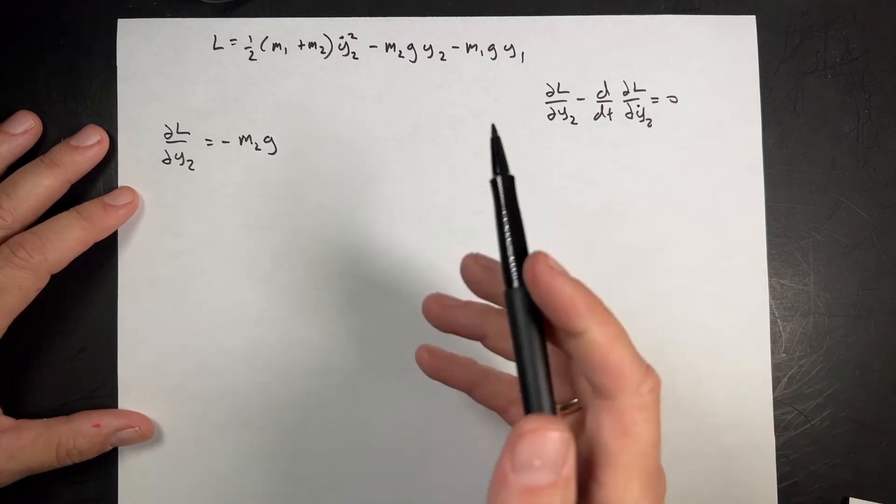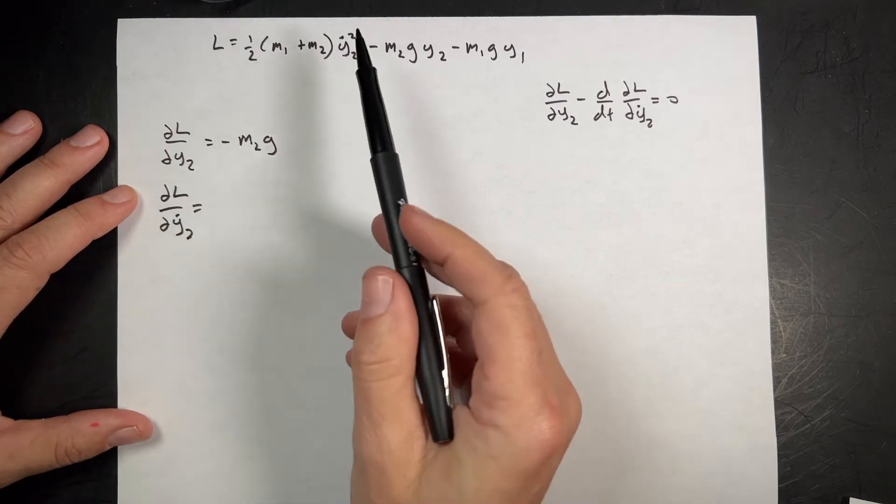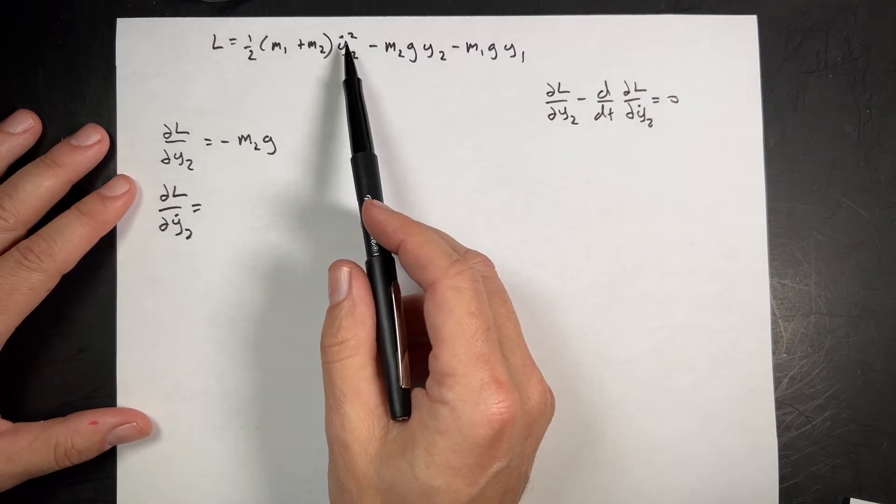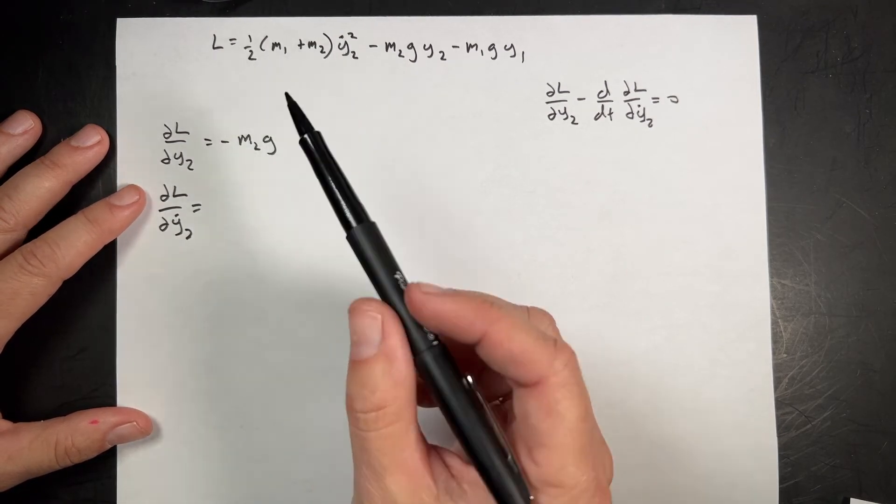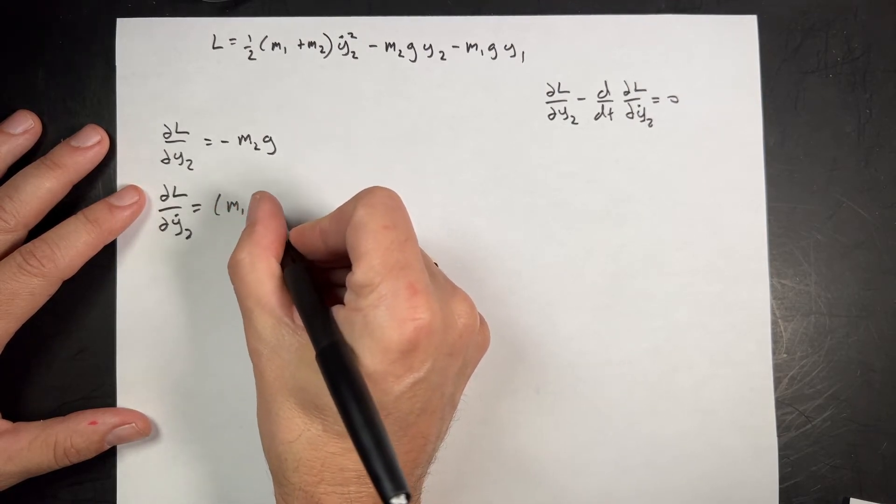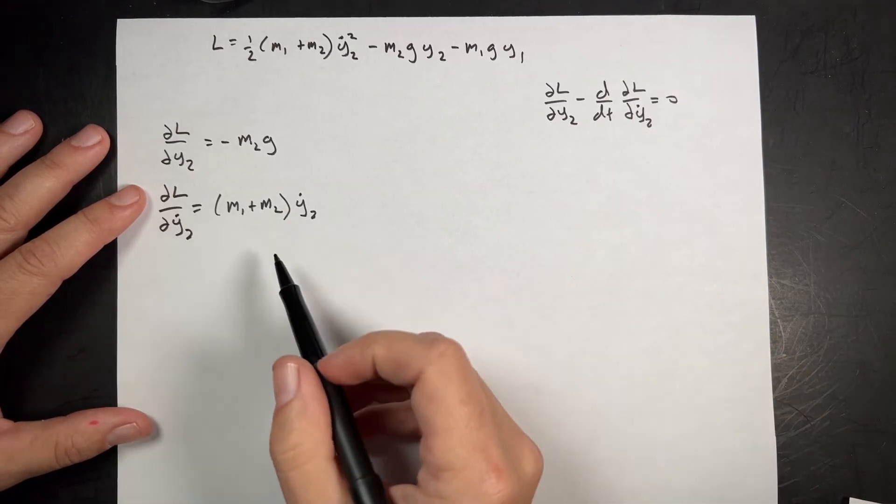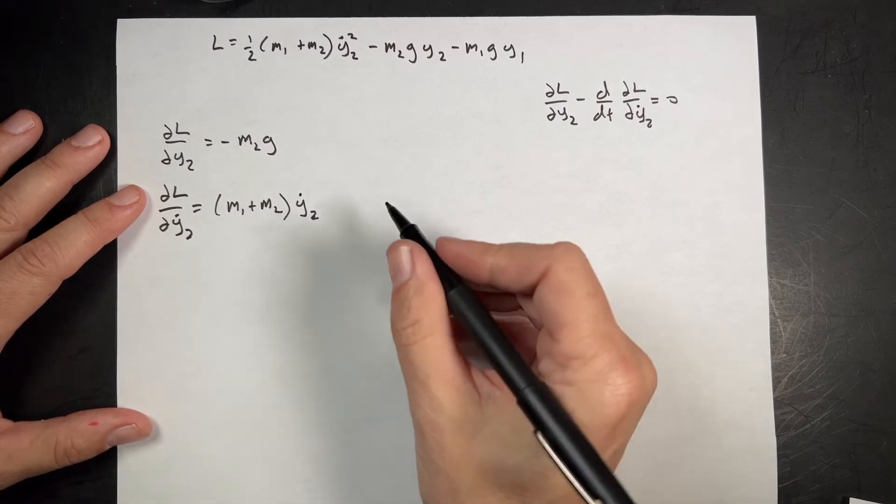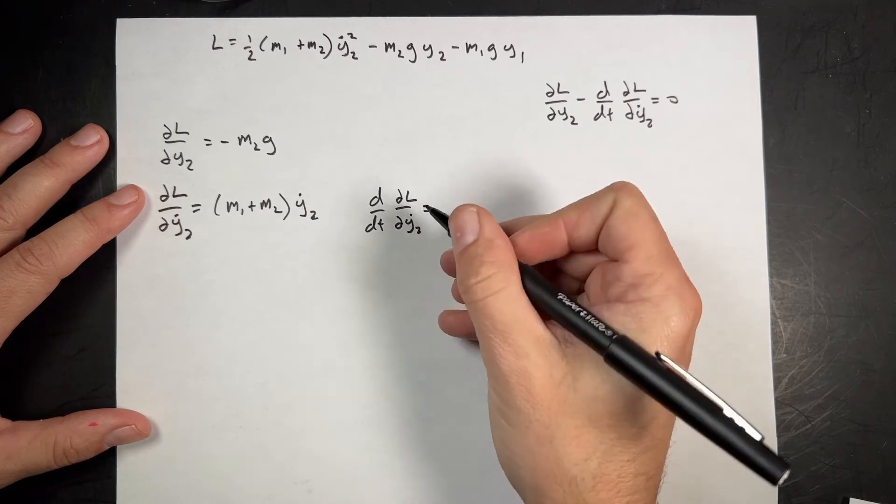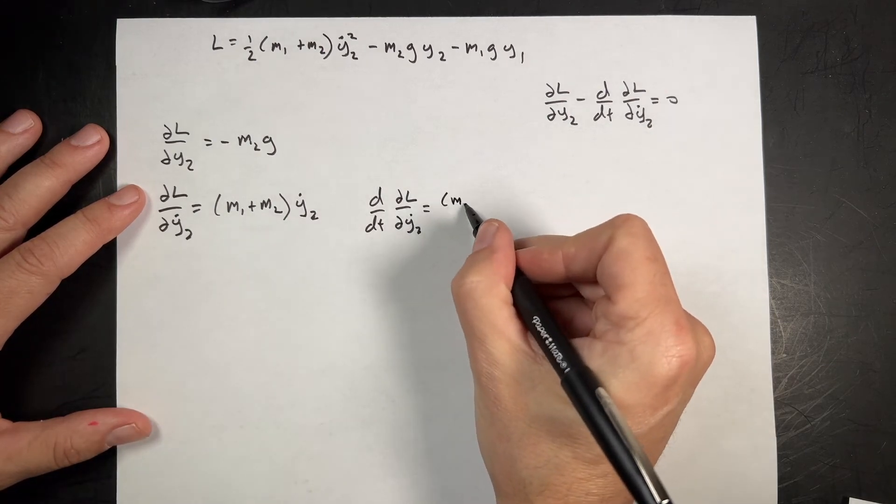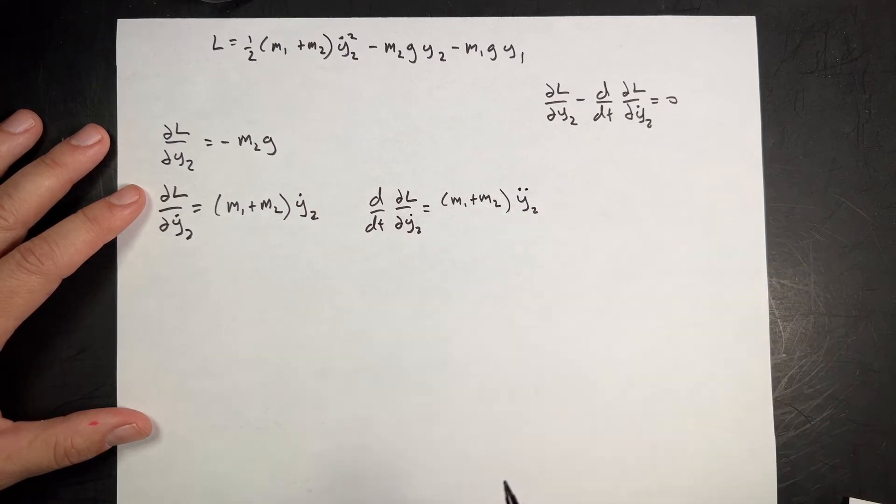Now let's do the partial of L with respect to y2 dot. Where's y2 dot? There's only one y2 dot, right there. If I take the derivative using the power rule, I bring the 2 down, it multiplies by the one half to give me 1, and that's raised to just the 1 power. So it's (m1 plus m2) times y2 dot. Now I need to take the time derivative. There's only one thing that actually changes with time in this expression, that's y2 dot. So the derivative with respect to time equals (m1 plus m2) times y2 double dot.